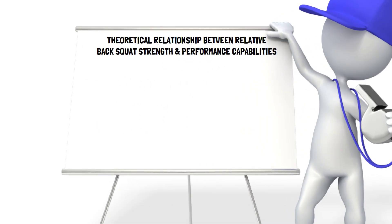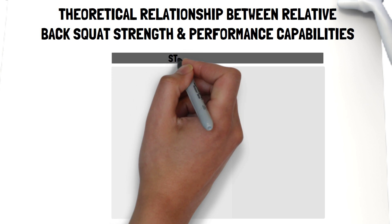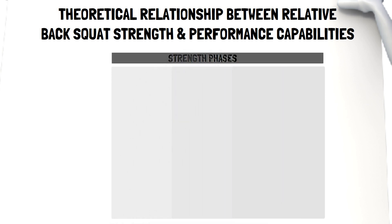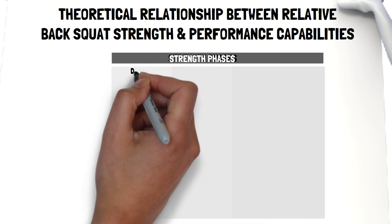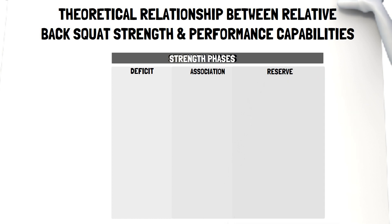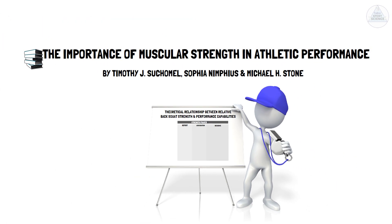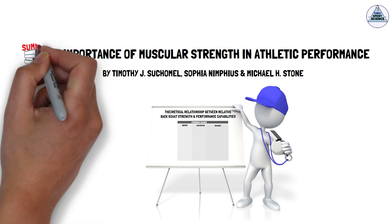Within the model, there are three primary strength phases: strength deficit, strength association, and strength reserve. This presentation, brought to you by Talkin' Sport Science, will provide a summary of their model.